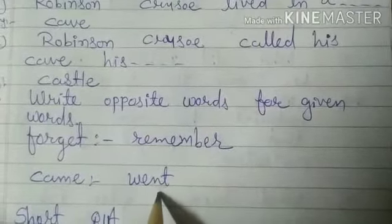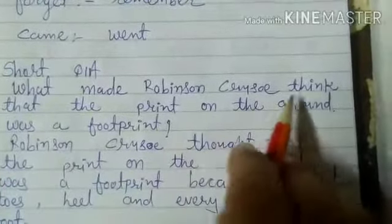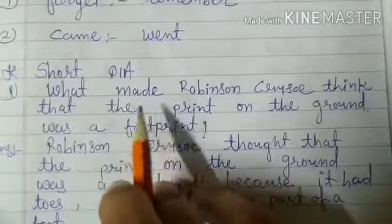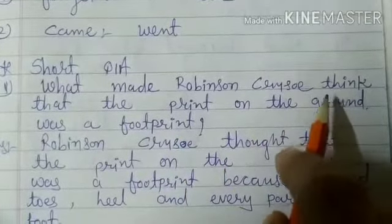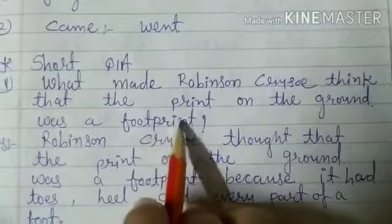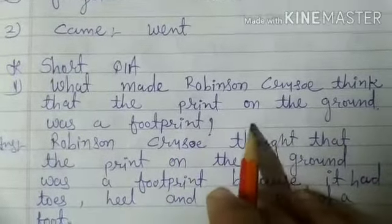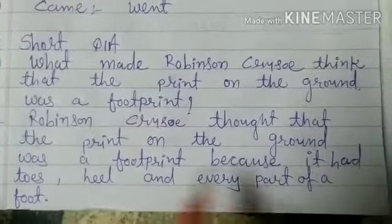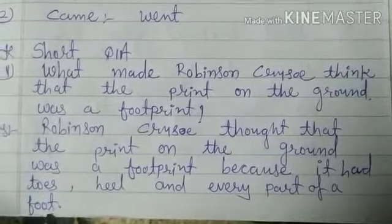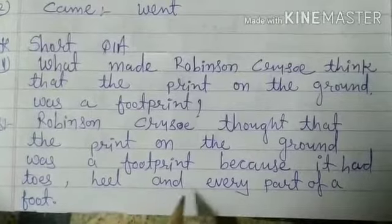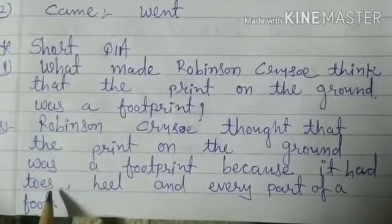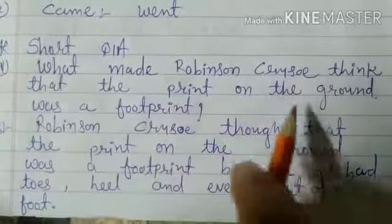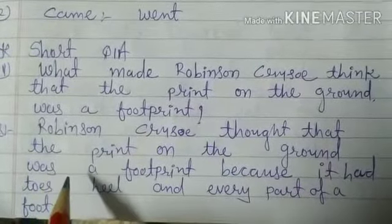And here is the thought question answer of the entire chapter. Number 1: what made Robinson Crusoe think that the print on the ground was a footprint? Answer: Robinson Crusoe thought that the print on the ground was a footprint because it had toes, heel, and every part of a foot. Kyunki uske jo parts the woh sare foot ke hi parts the — it had toes, uski pair ki ungliyan thi, heel, edhi thi, aur is tarah se pura jo print tha woh foot ke jaisa hi tha. So this made Robinson Crusoe think that the print on the ground was a footprint.